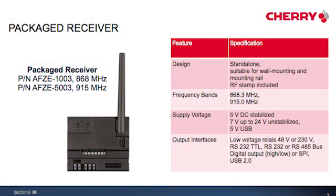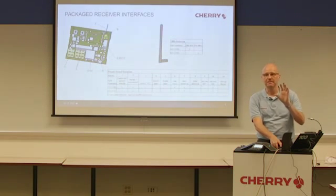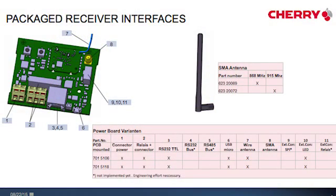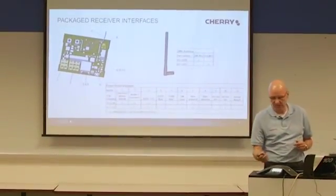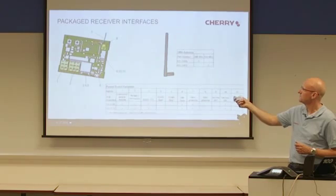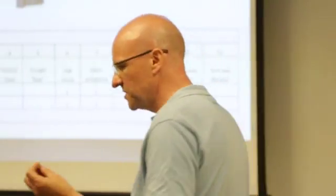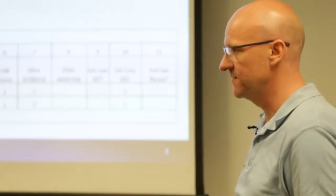Our packed receiver is the receiver on one side with different mounting options or different versions, and the receiver has our integrated receiver stamp. This is the heart of the receiver. The receiver stamp gets the information from the senders, from the air, from the RF channels, works it out, and gives it out to the interfaces.